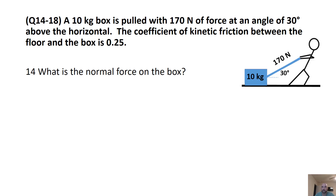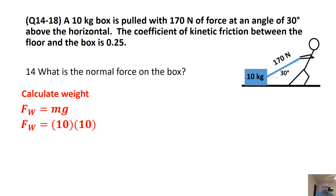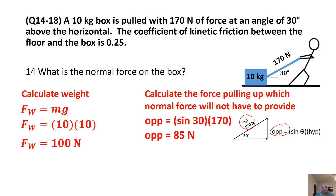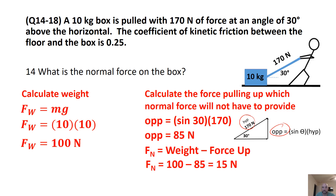Lastly, we have a 170 newton force applied at a 30-degree angle to a 10 kilogram box. Because the force is at an angle, it will relieve some of the normal force. First we find the weight: 10 kilograms times 10 equals 100 newtons. Then we find the vertical component of the applied force using sine of 30 times 170, which gives 85 newtons upward. So the ground only needs to push up 100 minus 85, giving a normal force of 15 newtons.